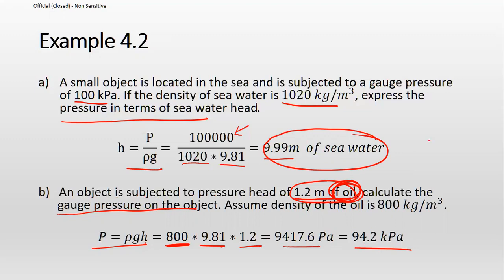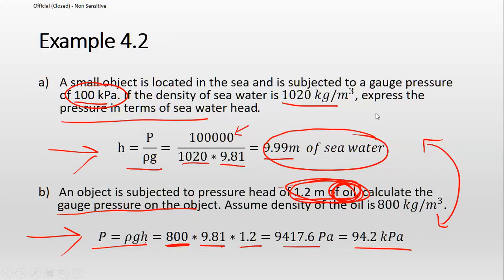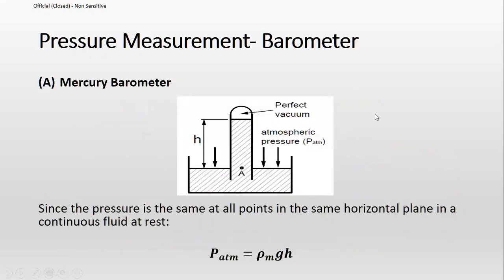We can also do it the other way: if an object is subjected to a pressure head of 1.2 meters of oil, we calculate the gauge pressure using P = ρ·g·H. Because it's oil, use the density of oil — giving P = 800 × 9.81 × 1.2 = 9417.6 Pascal. You must be able to convert between gauge pressure and head in both directions.